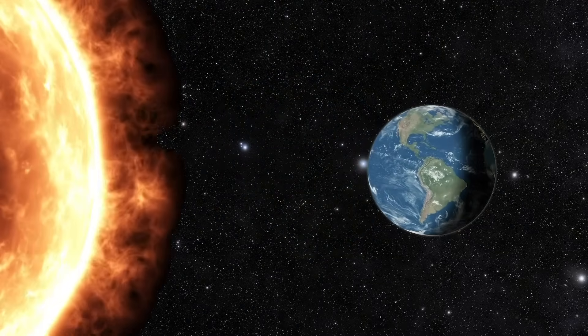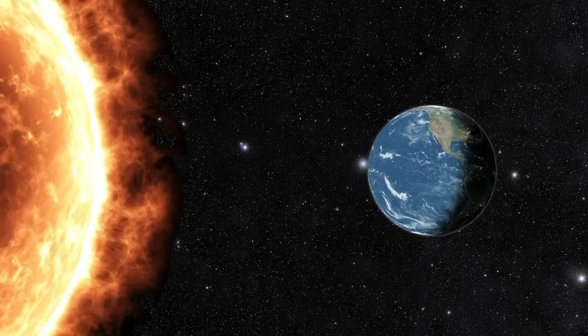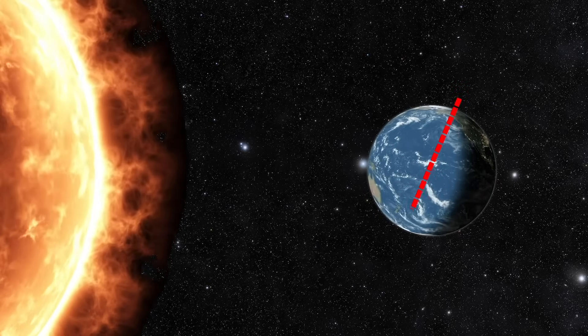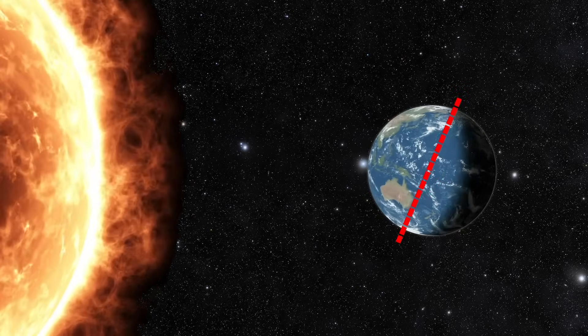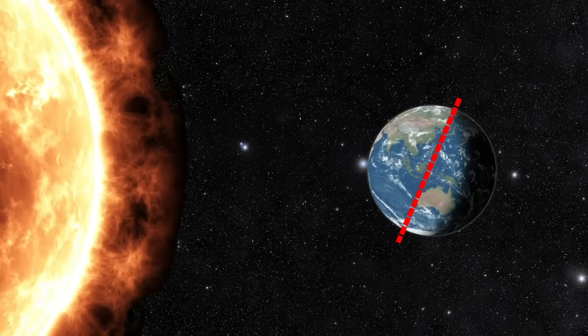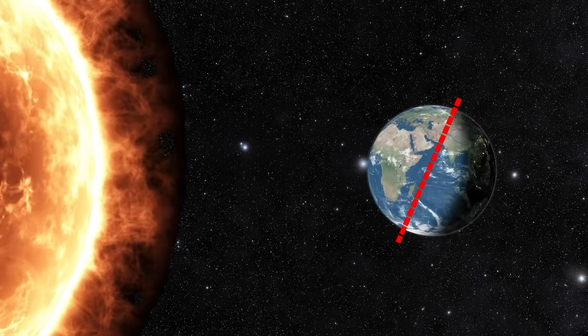One way the Earth moves is by spinning on its axis. An axis is an imaginary line that runs through the Earth's centre. This spinning movement on its axis is called a rotation.